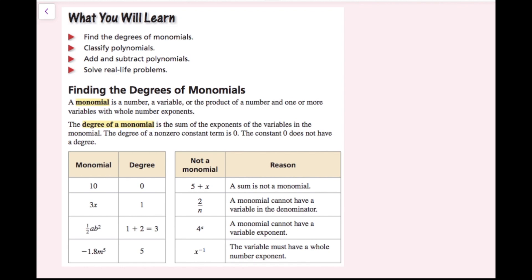A monomial is a number, a variable, or the product of a number and one or more variables with whole number exponents. The degree of the monomial is the sum of the exponents of the variables in the monomial.